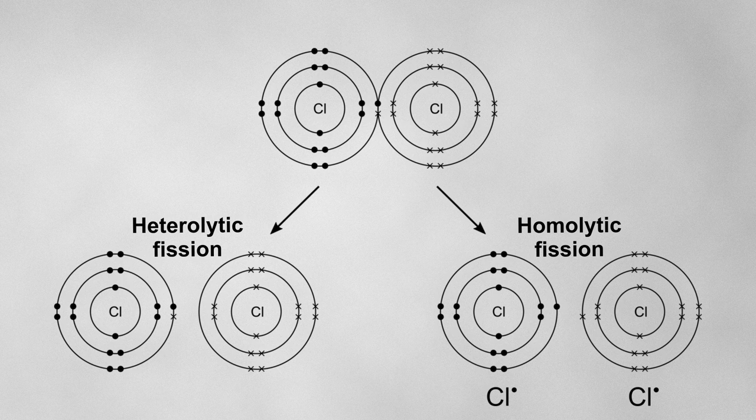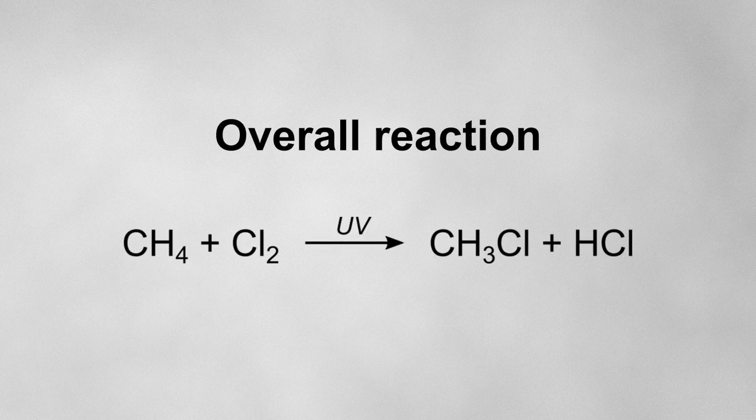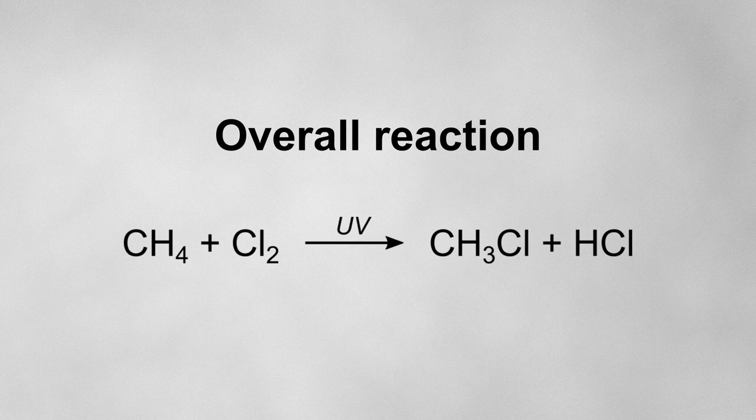Let's go through the mechanism for how these free radicals react with an alkane. The example we'll look at will be this, where, overall, a chlorine atom is substituting onto methane to form chloromethane and hydrogen chloride. Free radical substitution occurs in three steps.